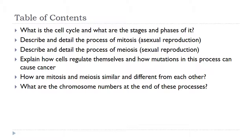Before we get into the content, I want to make sure I tell you what the content's going to be. These are the main ideas, the main standards I'm supposed to be teaching you. The first one: what is the cell cycle and what are the stages and phases of it? We'll also talk about mitosis, which is asexual reproduction, and meiosis, which is sexual reproduction. We'll explain how cells regulate themselves and how mutations can cause cancer, compare mitosis and meiosis, and mention some stuff about chromosome numbers throughout the presentation.